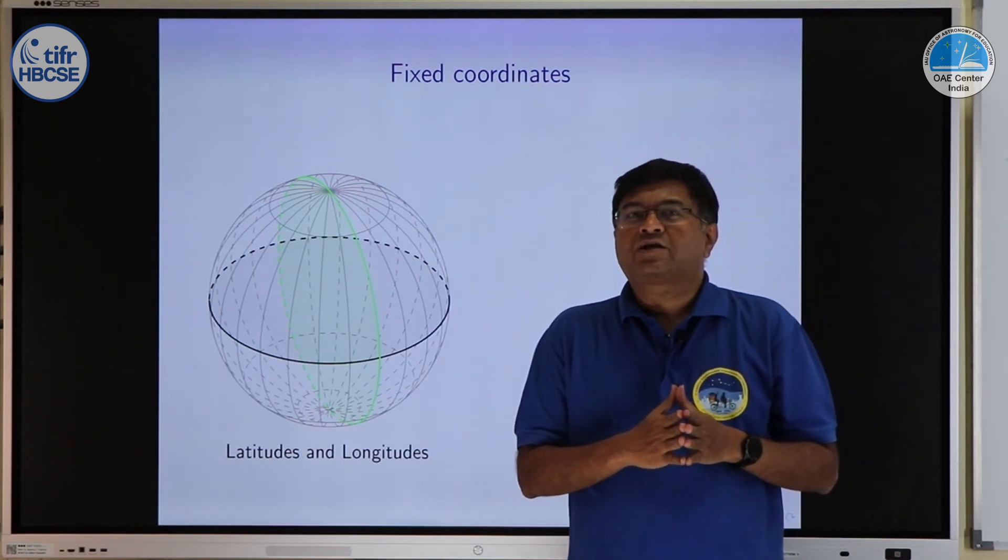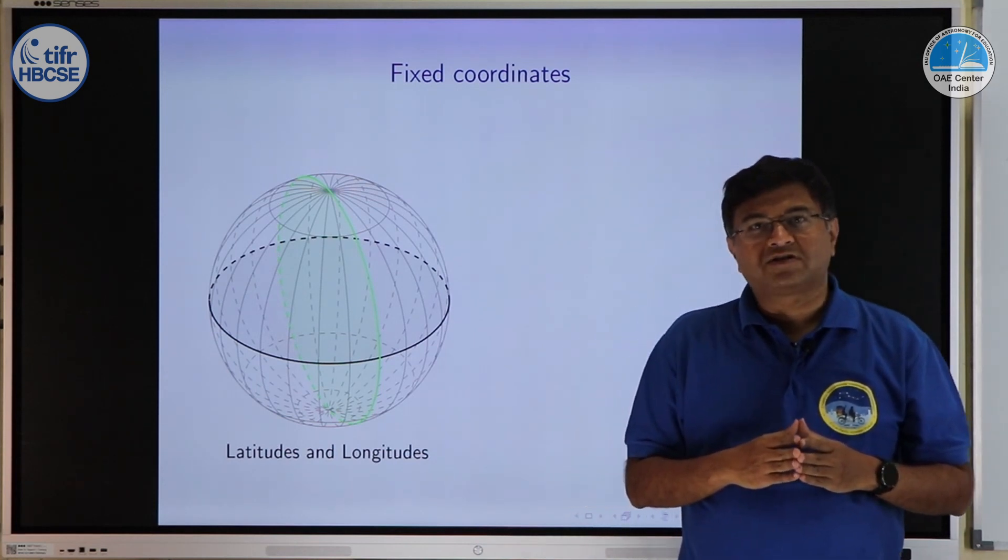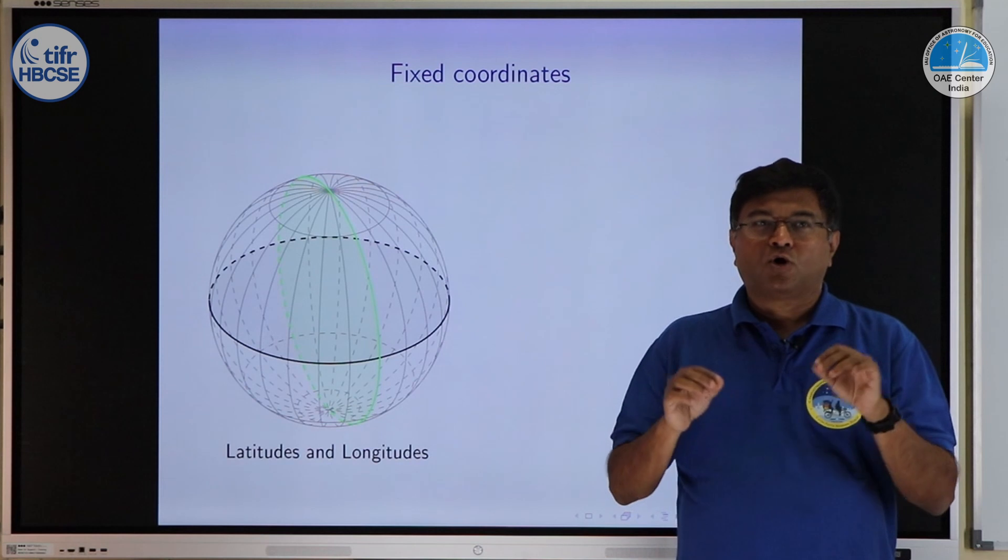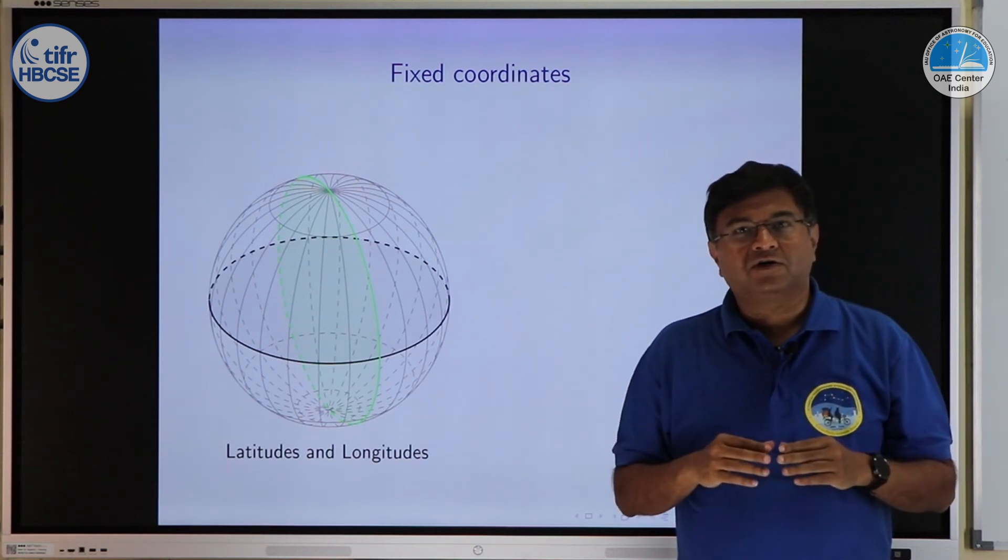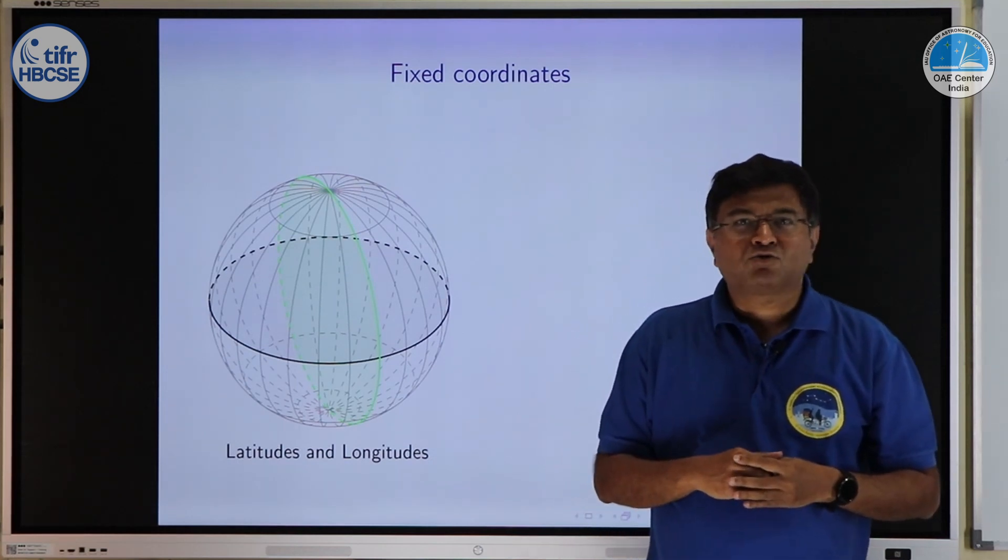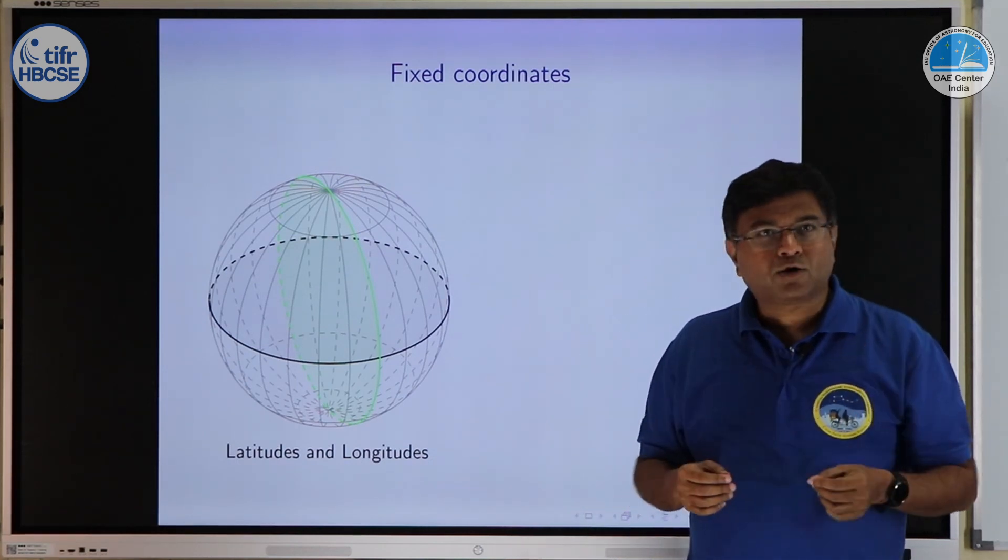In geography you have actually encountered one form of absolute coordinate system, a system to show or locate places on surface of earth, a system we know as latitudes and longitudes. How do latitudes and longitudes work? Just a quick recall.